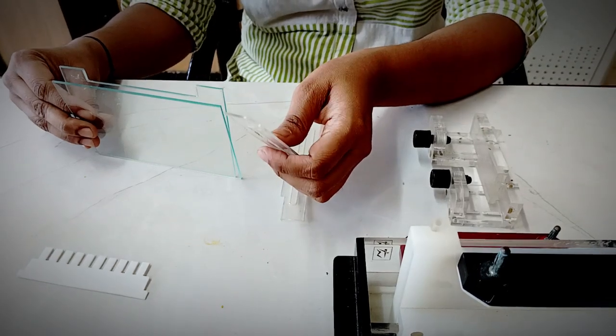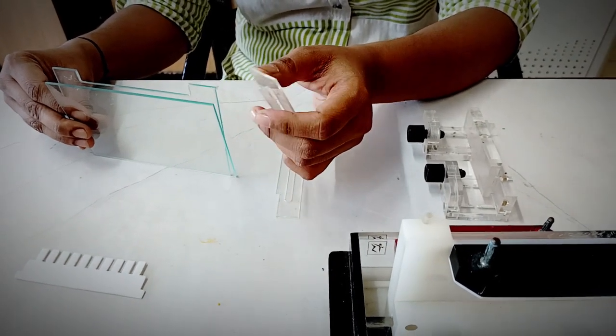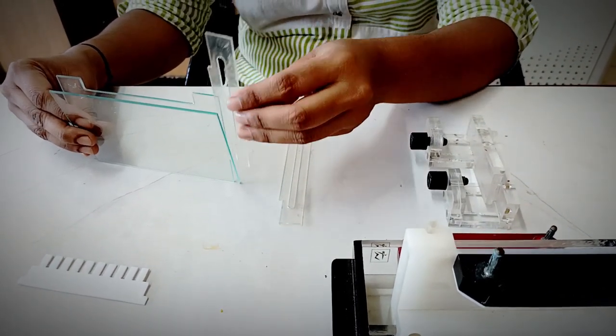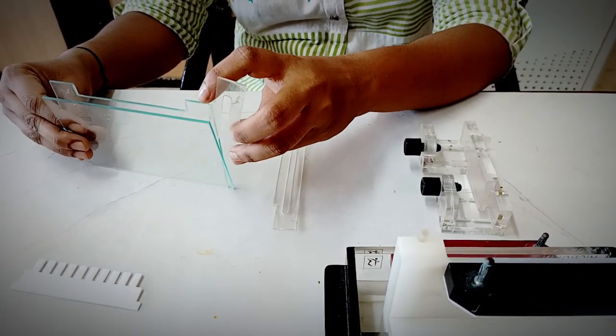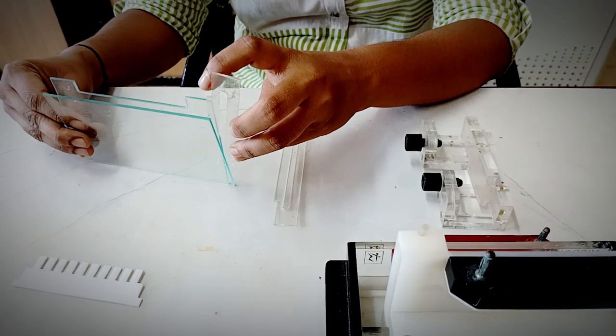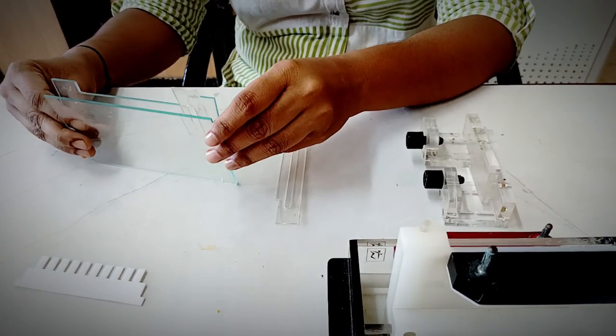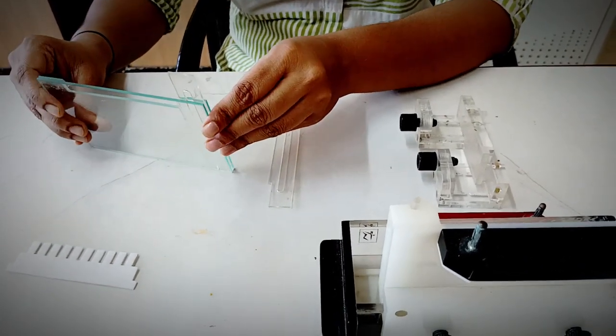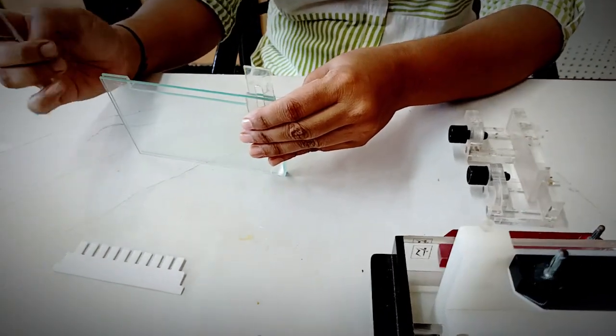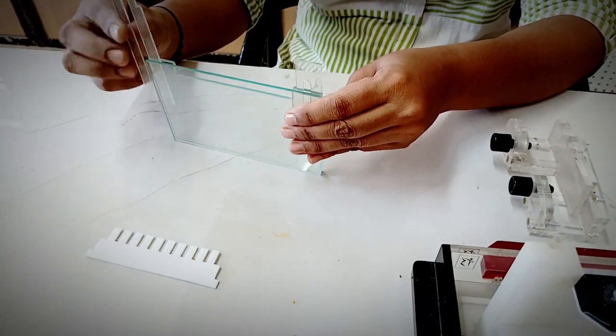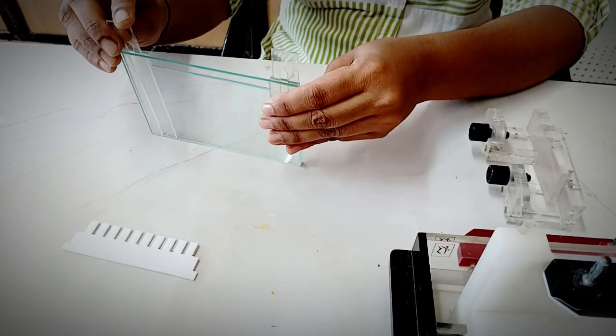The spacer has one plain side and one side with a notch. You have to keep the spacer in such a manner that the side which has the notch should be facing inwards, and the side which is plain should be facing outwards. Similarly, you have to place another spacer also in this manner.